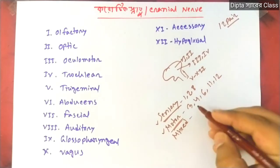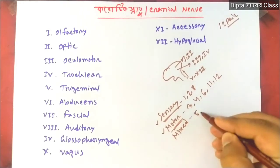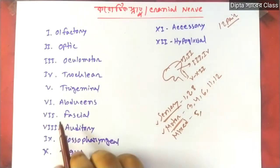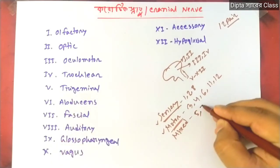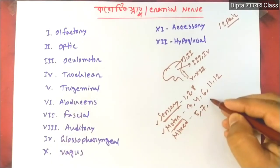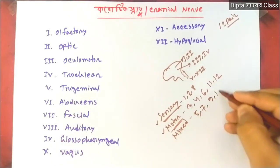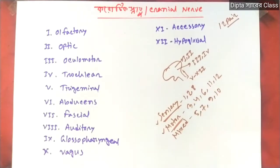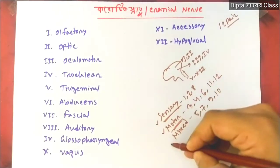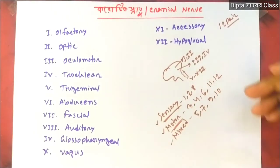There is the Trigeminal nerve number, then the Facial nerve. These are mixed nerves — they have both a sensory part and a motor part, which is very important.